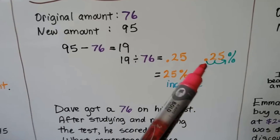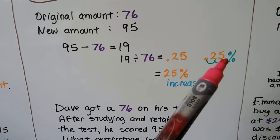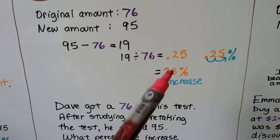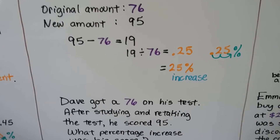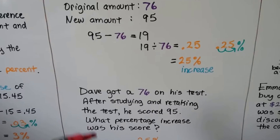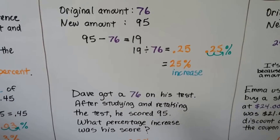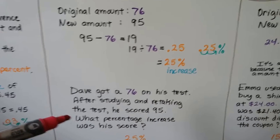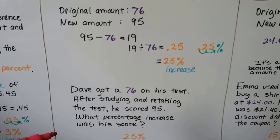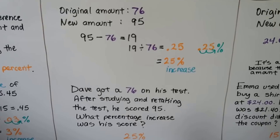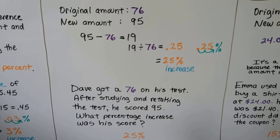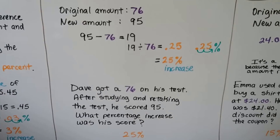We change it to a percentage — move the decimal point back and put on a percent sign — and we get a 25% increase. For example, if Dave got a 76 on his test, then after studying and retaking the test he scored 95, the percentage increase in his score was 25%.